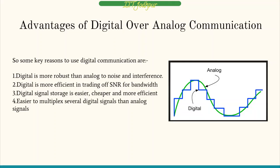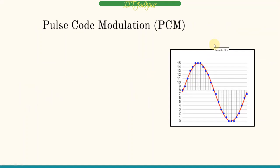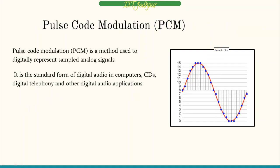The points like bandwidth and noise might look complex, but we will cover them individually later in the video. Pulse Code Modulation is a method used to digitally represent sampled analog signals. It is a very standard form of digital audio in computers and many other digital audio applications.